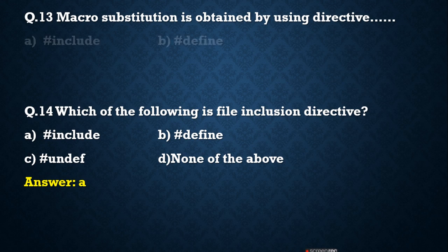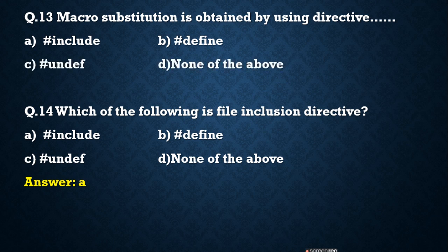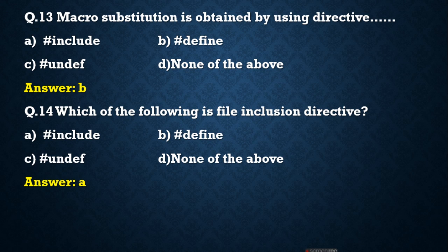Next question: Macro substitution is obtained by using which directive? Options are: A) #include, B) #define, C) #undef, D) none of the above. The correct answer is B, #define. For macro substitution we use #define — for example, #define MAX 5 or #define MAX 10 in your program.